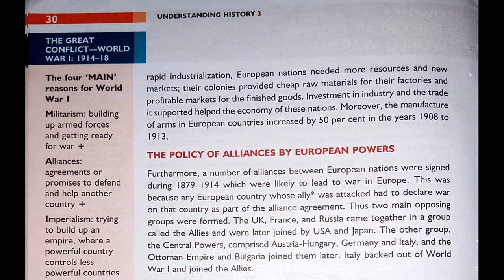Moreover, the manufacture of arms in European countries increased by 50% in the years 1908 to 1913. The Policy of Alliances: A number of alliances between European nations were signed during 1879 to 1914, which were likely to lead to war in Europe. This was because any European country whose ally was attacked had to declare war on the attacking country as part of the alliance agreement. Ally means a state formally cooperating with another for a military or other purpose.